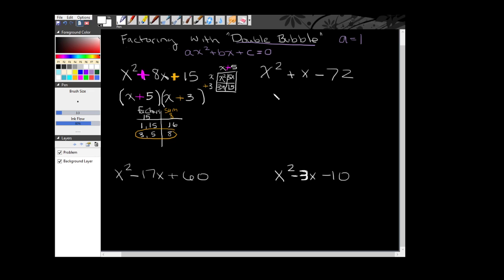So now let's try this second example. So as always, I'm starting with my double bubble, my two sets of parentheses. Now remember when the parentheses are touching like this, they are multiplying together. In order to get an x squared, I'm going to fill in an x times an x.